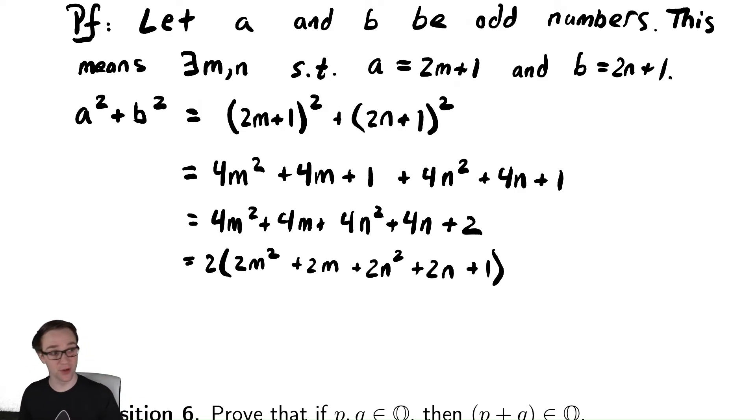We can observe that integers are closed under multiplication and squaring and addition. So 2 times m squared, still an integer, add 2m to it, still an integer, and so on. So a² + b² must be even.